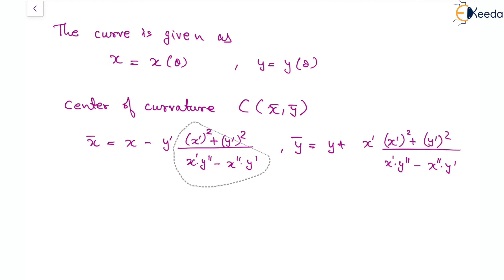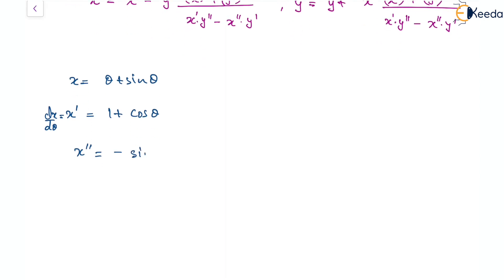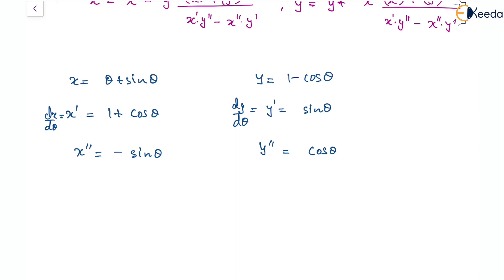We notice that the common factor appearing in both expressions is the same, so let's find it first. We have x equal to theta plus sin theta, so x' (derivative with respect to theta) is 1 plus cos theta, and x'' (second derivative) is minus sin theta. For y equal to 1 minus cos theta, y' is sin theta and y'' is cos theta.